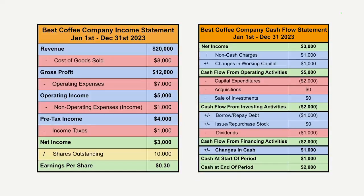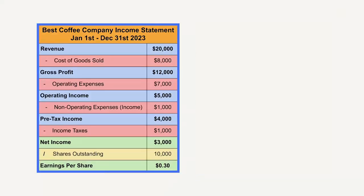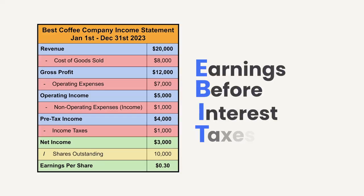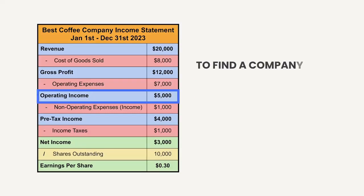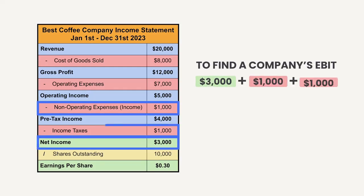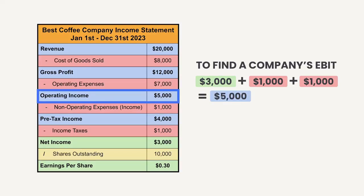First, let's take a look at the company's income statement, where you can find its EBIT, or Earnings Before Interest and Taxes. This is also known as a company's operating income. To find a company's earnings before interest and taxes, we simply take the company's net income — aka earnings — and then add back in the interest expense and the company's tax expense. In this case, this company's earnings before interest and taxes is $5,000.